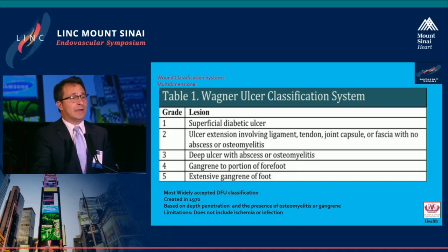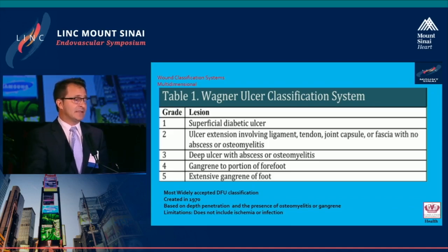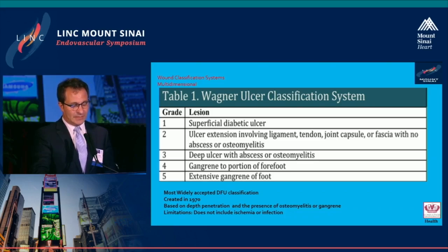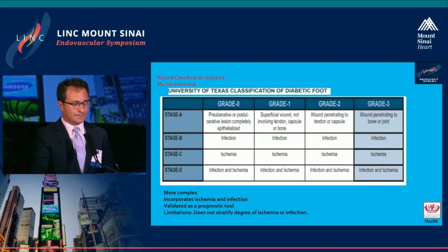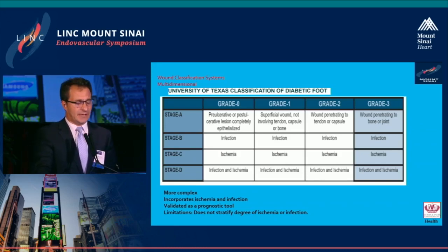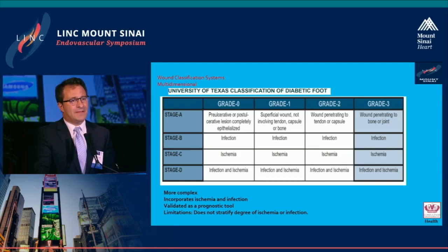The most widely accepted diabetic foot ulcer classification is Wagner's classification, created in 1970. It is based on depth of penetration and the presence or absence of osteomyelitis or gangrene, graded from 1 to 5. Its limitation is that it does not include ischemia or infection. The University of Texas classification is more complex, incorporates ischemia and infection, and has been validated as a prognostic tool, though it does not stratify the degree of ischemia or infection.